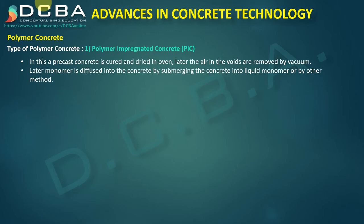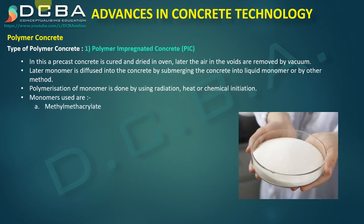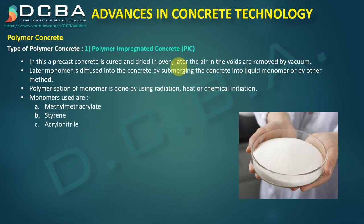After submerging the concrete in the liquid monomer, polymerization of the monomer is carried out using radiation, heat, or chemical initiation, converting the monomer into a polymer that fills the voids. The monomers used include methyl methacrylate, styrene, acrylonitrile, and T-butyl styrene, among others.